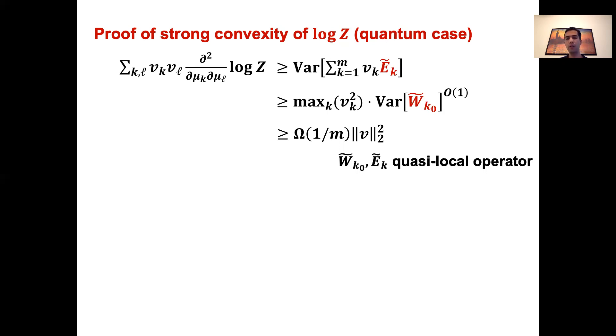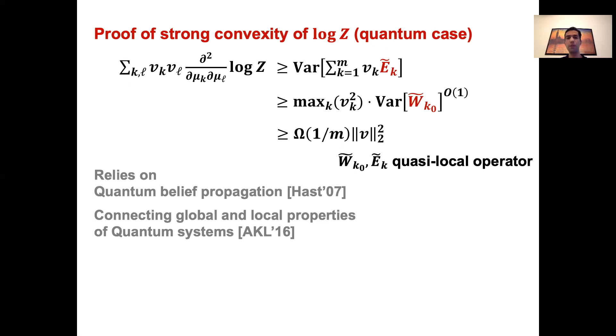Note that compared to the classical case, where we lower bounded the variance by sum of order m many local terms, here we are lower bounding it by a single local term. And therefore, we get a weaker bound of order 1 over m instead of a constant. To prove these bounds, we rely on techniques from many-body physics, like quantum belief propagation and connecting global to local properties. And you can see more intuitive explanations of these in the introduction of our paper.